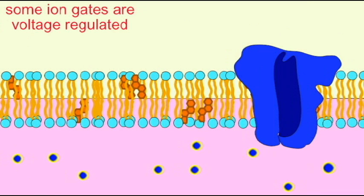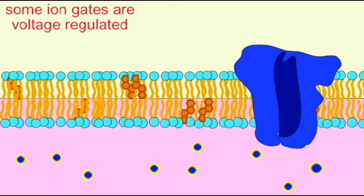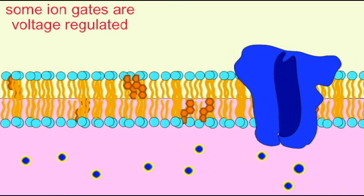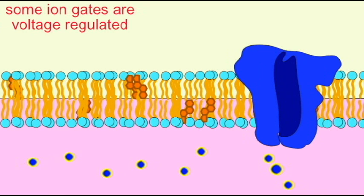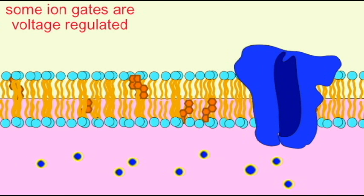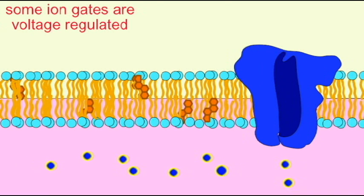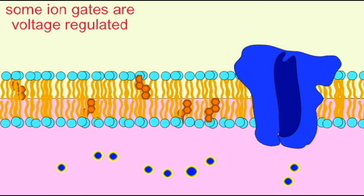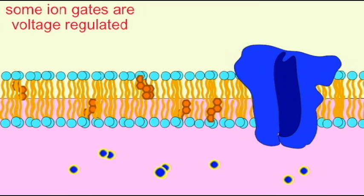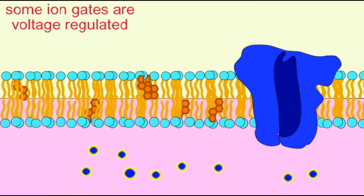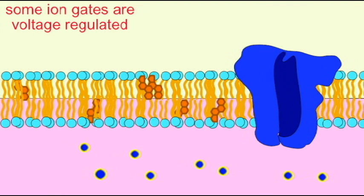There are different kinds of ions and different types of ion channels. Just as there are sodium gates which are voltage regulated, here there is a potassium gate which is voltage regulated. What determines whether the gate is open or closed is the voltage difference across the cell membrane.